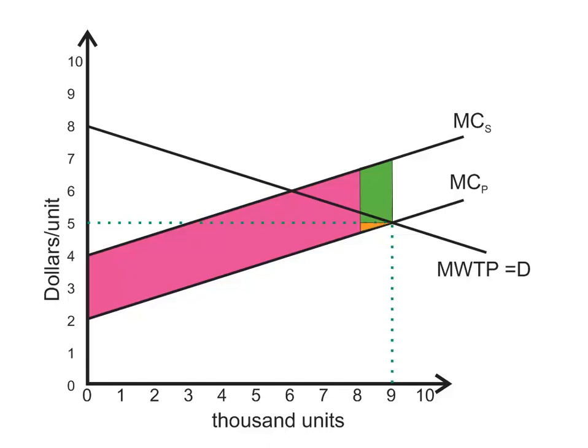Well, they're not making very much profit on those last units. The loss in producer surplus by reducing their supply by 1,000 units would only be that small orange area. So yeah, a deal could be made, and they would reduce their supply.